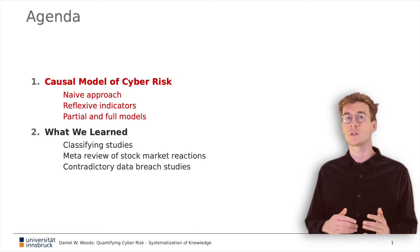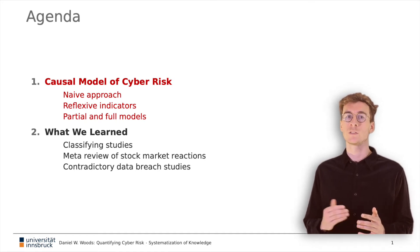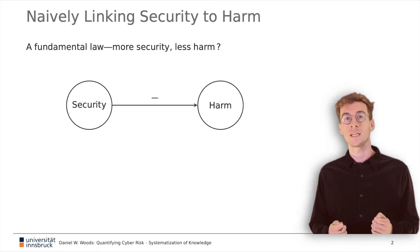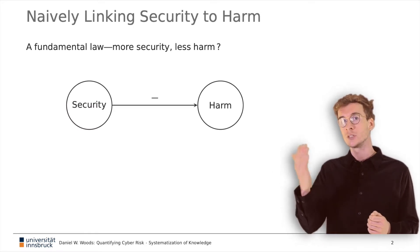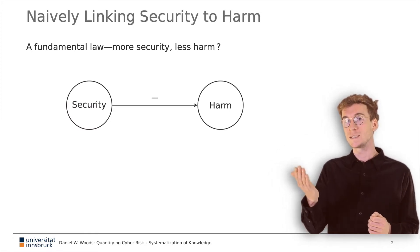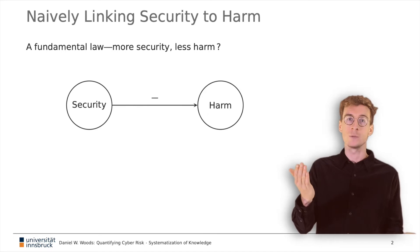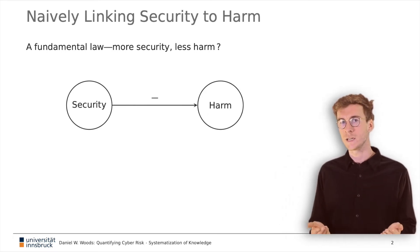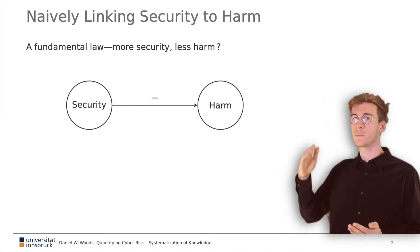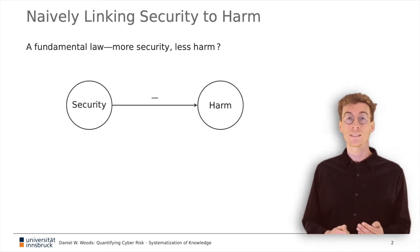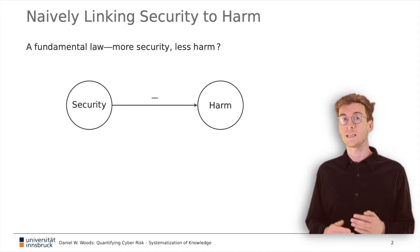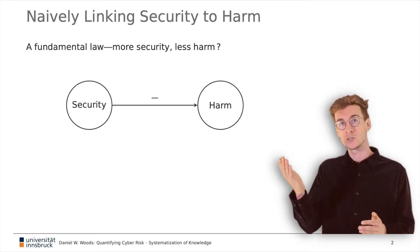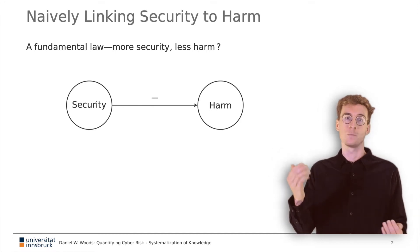In trying to explain the causal role of security interventions, a natural law might go something like: the more security an entity has, the less harm they will suffer. This is almost true by definition, and we can describe this visually with the negative sign denoting a negative relationship — namely, more security leads to less harm.